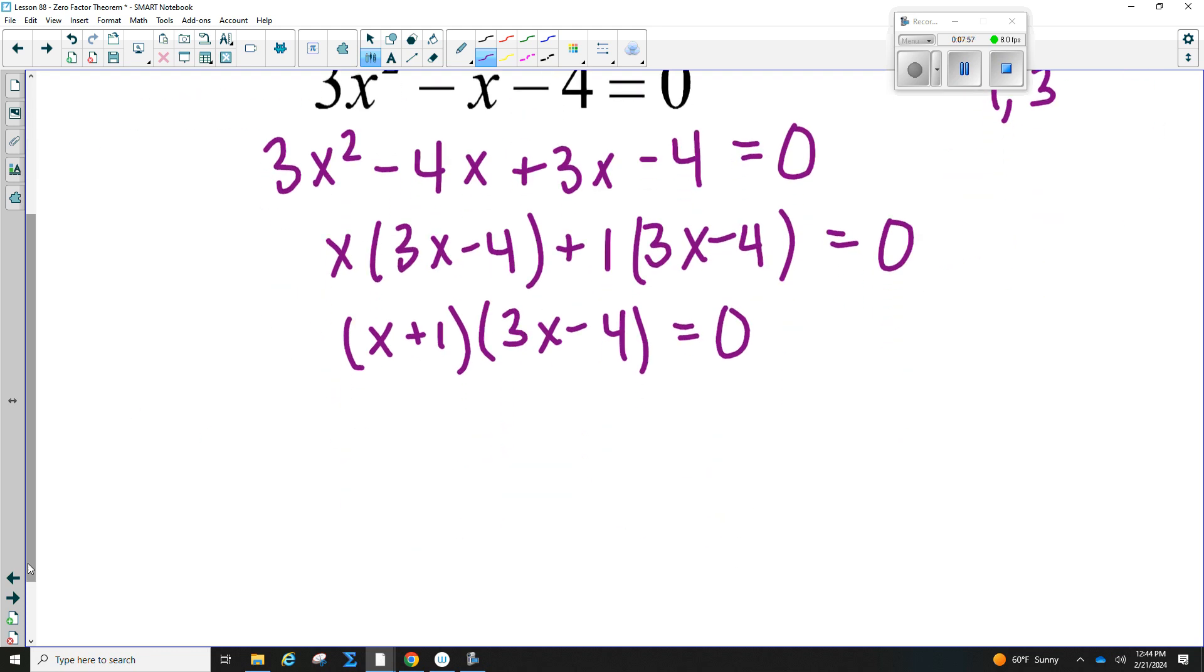So everyone, what is this solution? Negative 1. Can you do this one in your head? What is it? Positive 4 over 3. If you don't know, though, set it equal to 0. Add the 4 to the other side. Divide by 3. Positive 4 thirds. All right, that's it. Let's try some on the left.